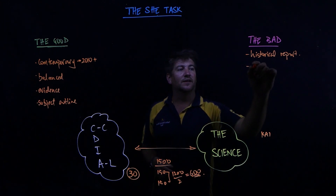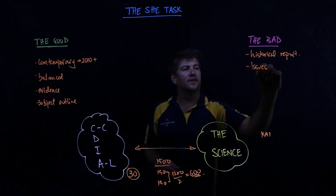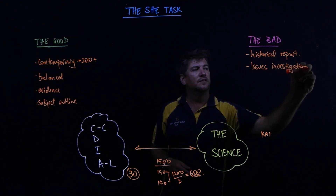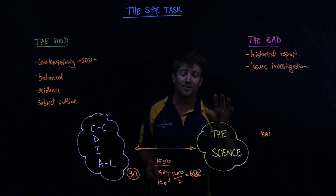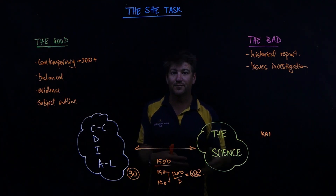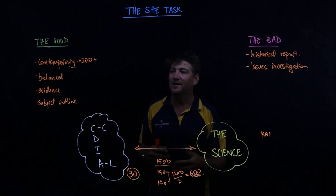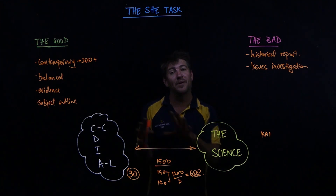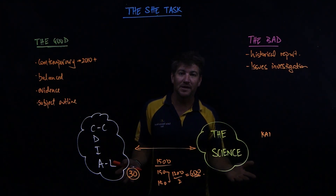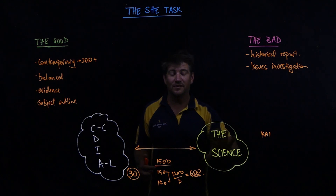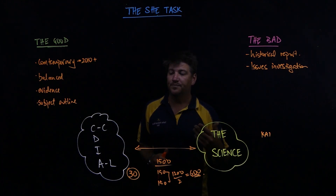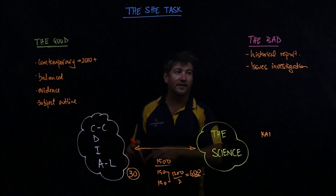The other bad ones come across as an issues investigation — talking about what's good about the issue, what's bad about the issue, then giving your opinion at the end. You can still do that with the SHE Task, but you need to have the elements of the Science of Human Endeavour in there: CC DIAL.